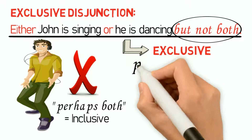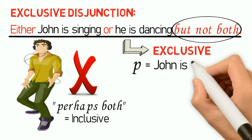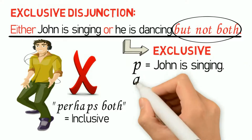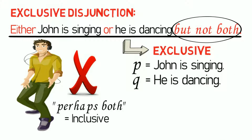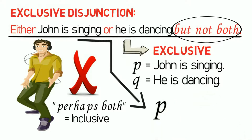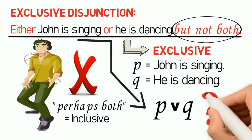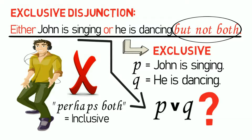Now if we let P stand for 'John is singing' and Q for 'he is dancing,' then the statement 'Either John is singing or he is dancing but not both' may be symbolized as 'either P or Q.' However, this is faulty because it does not clearly specify what the statement 'either John is singing or he is dancing but not both' states.